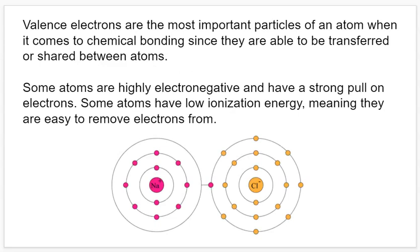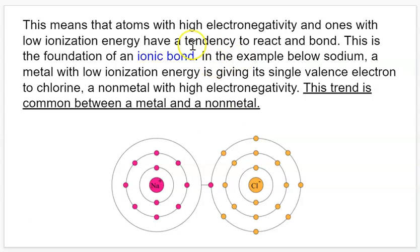Valence electrons are the outermost shell electrons and they're the most important when it comes to bonding, because when a chemical bond occurs electrons are being transferred or shared between two elements. The electrons in the outermost part of the electron cloud are most likely to do that. Some atoms are highly electronegative, meaning they want to pull electrons toward them, and others have low ionization energy, which means electrons are easy to remove. There is a synergy where atoms with high electronegativity and low ionization energy have a tendency to react and bond.